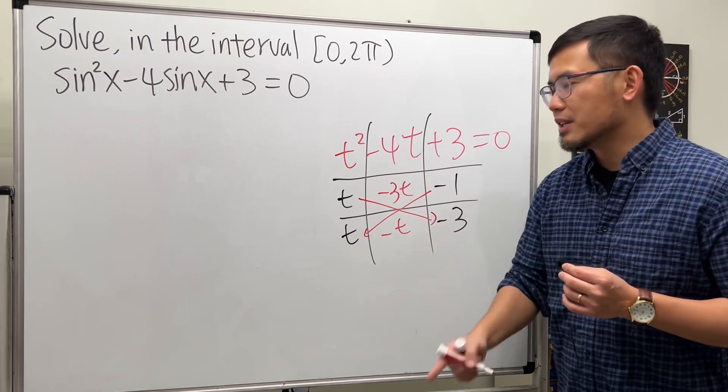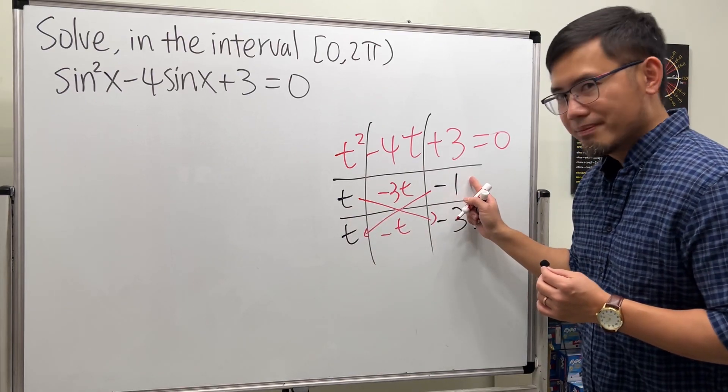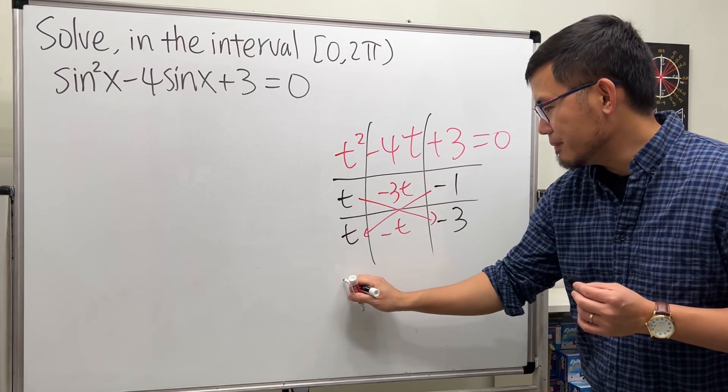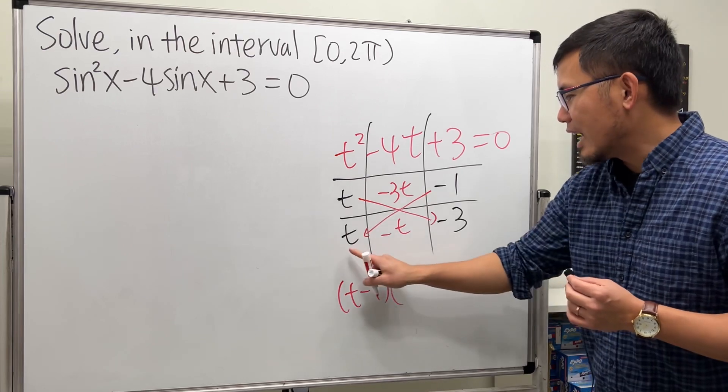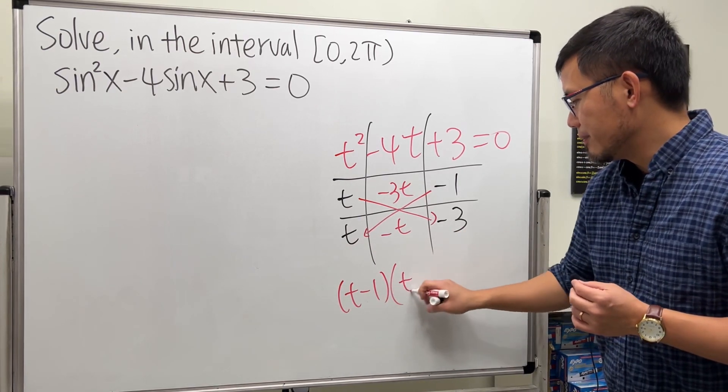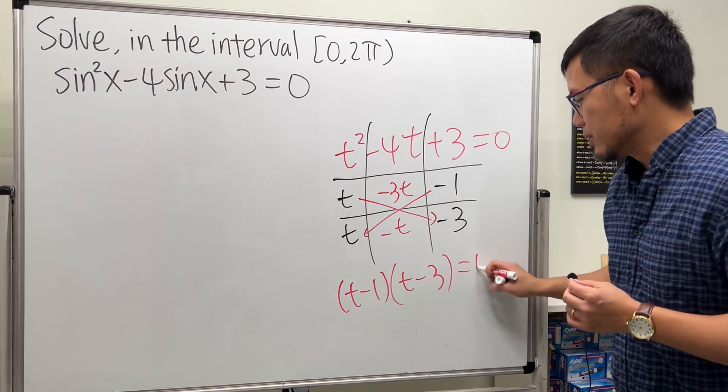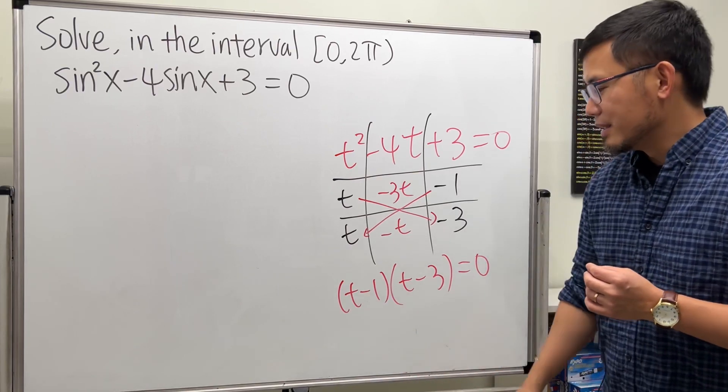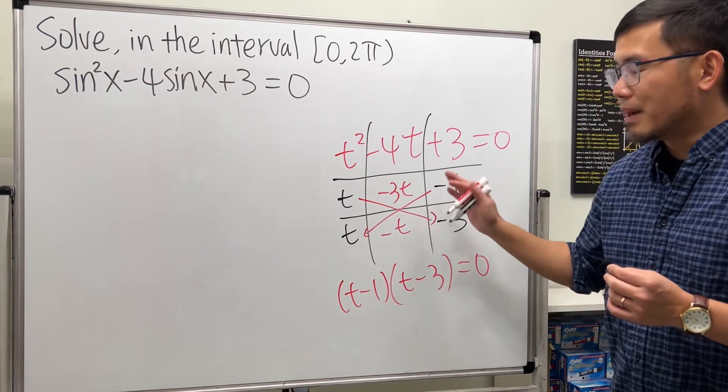So the factoring is t minus 1, you go across for the answer, t minus 1 times t minus 3, and that's equal to 0. And then you can continue from here. So t equals 1, t equals 3.